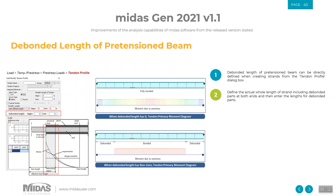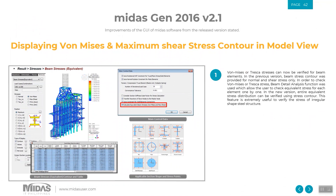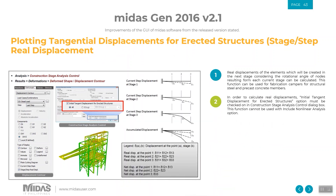Aside from having a perfect design and analysis tool, it is also very important that after running the software, results are easy to interpret and visualize. I will now tackle the GUI improvements made from 2016 up to 2021. Starting 2016 version 2.1, Midas has the capability to produce high-quality results like von Mises and maximum shear stress contours. Real displacement caused by stage construction on steel and precast concrete members can now also be checked using the Initial Tangent Displacement option for erected structures.